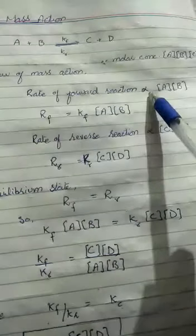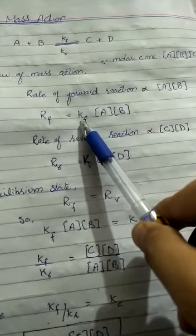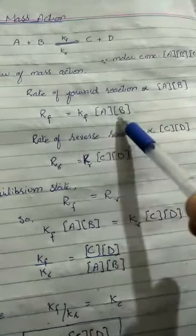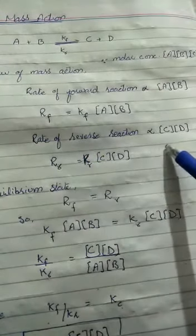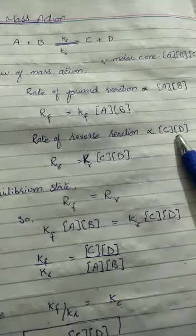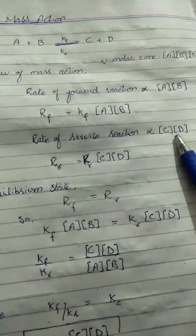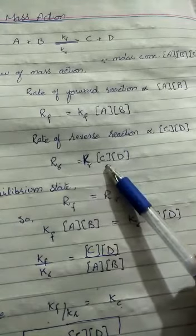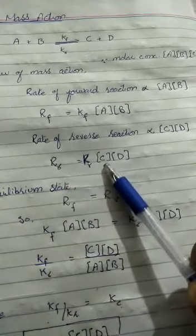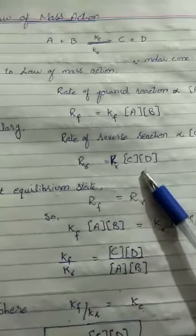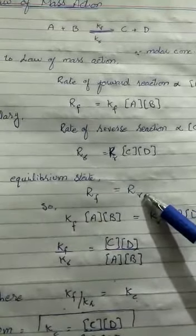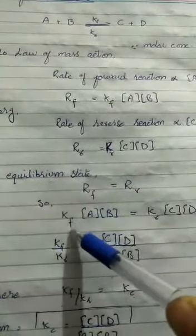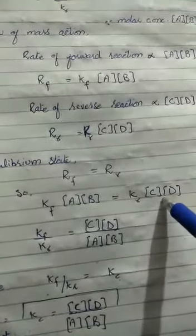Removing the proportionality sign, we introduce constant kf, so: Rate of forward reaction (Rf) = kf[A][B]. Similarly, the rate of reverse reaction is directly proportional to the molar concentrations of products, giving: Rate of reverse reaction (Rr) = kr[C][D]. At equilibrium, the rate of forward reaction equals the rate of reverse reaction, so: kf[A][B] = kr[C][D].